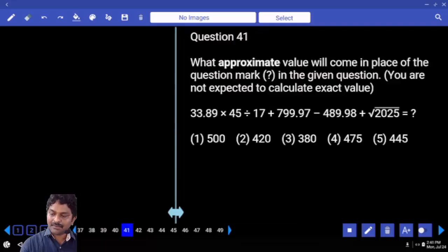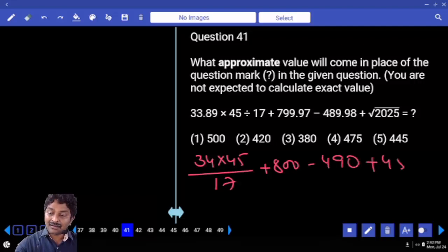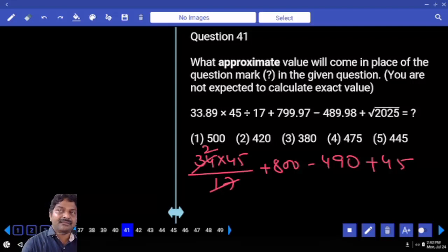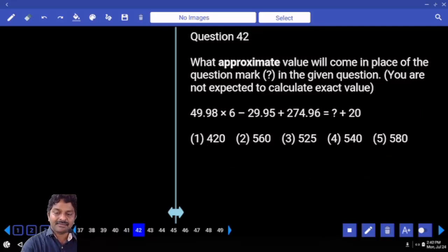For Question 42, let me verify the last digit. Why approximations? In approximations, we cannot verify the last digit. For multiplication also, we cannot apply 2 times of 45. 90 subtracted from 490 is still 400. Subtract 400 from 800, and last one 445.